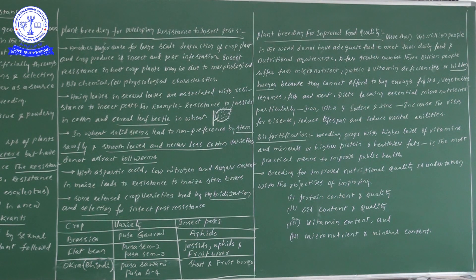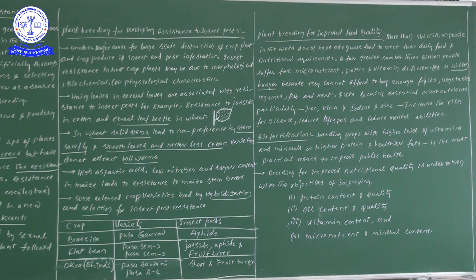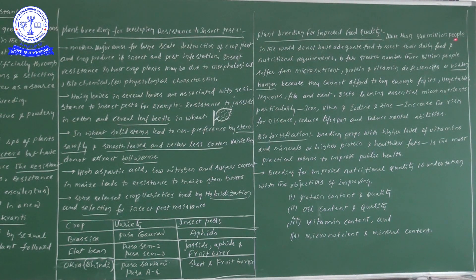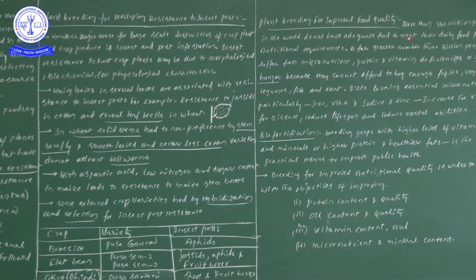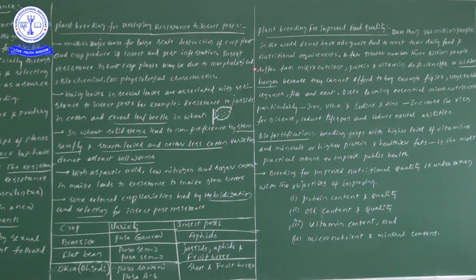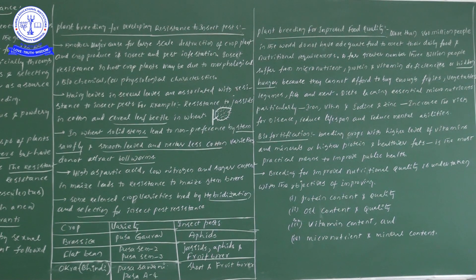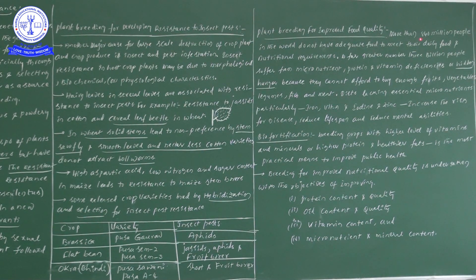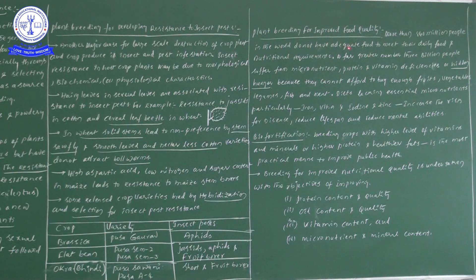Next new concept: plant breeding for improved food quality. By using plant breeding methods, we can improve food quality. More than 840 million people in the world do not have adequate food to meet their daily food and nutritional requirements.